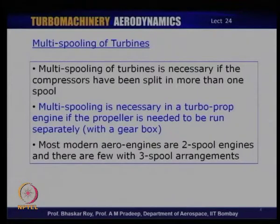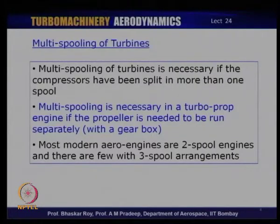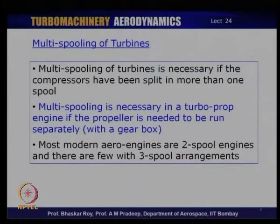For example, one spool may run at 7,000 RPM and another at 10,000 RPM. In a military engine, one spool may run at 10,000 RPM while the other runs at 16,000 RPM. This is decided by the engine designer, and a certain amount of matching between the turbine and the compressor is necessary spool-wise to decide the split of work, split of pressure ratio, and the RPM at which each individual spool should run.